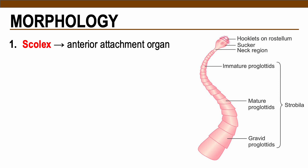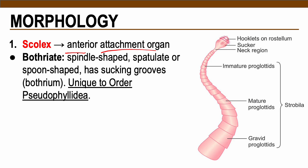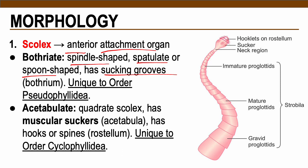Now let's talk about the morphology of our Cestodes or tapeworms. The first part is the scolex, which is anteriorly positioned and is the attachment organ of the tapeworm. There are two types of scolex based on the order. The first is the bothriate — spindle-shaped, spatulate, or spoon-shaped with sucking grooves — unique to the order Pseudophyllidea, which includes Diphyllobothrium latum and Spirometra species. The second is the acetabulate, the most common scolex, unique to your Cyclophyllideans, such as Taenia solium and Taenia saginata. The acetabulate is quadrate, cube-like, and contains muscular suckers called acetabula. Some of these contain hooks or spines called the rostellum.